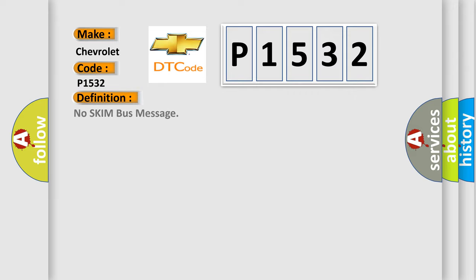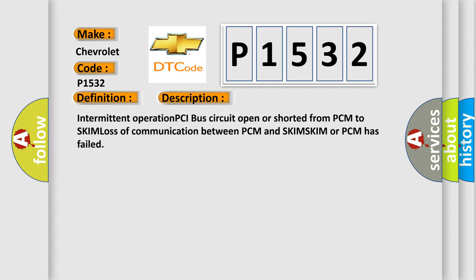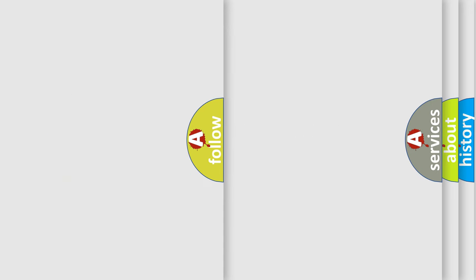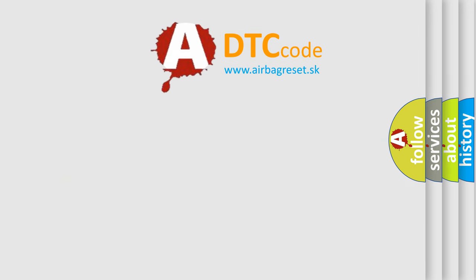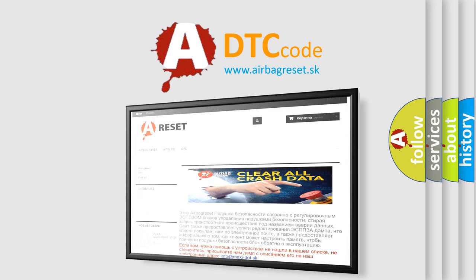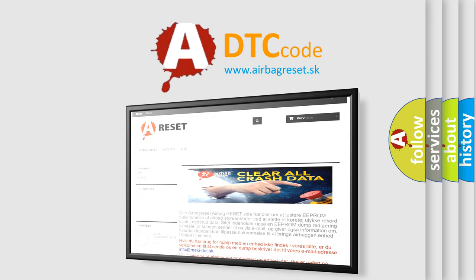The basic definition is No SKIM Bus Message. And now this is a short description of this DTC code: Intermittent operation PCI bus circuit open or shorted from PCM to SKIM, loss of communication between PCM and SKIM, SKIM or PCM has failed. The Airbag Reset website aims to provide information in 52 languages. Thank you for your attention and stay tuned for the next video.